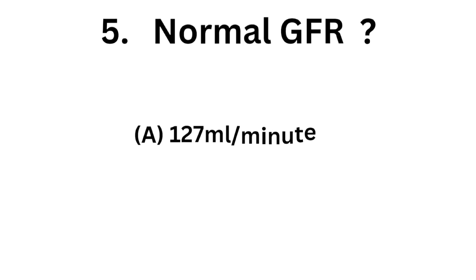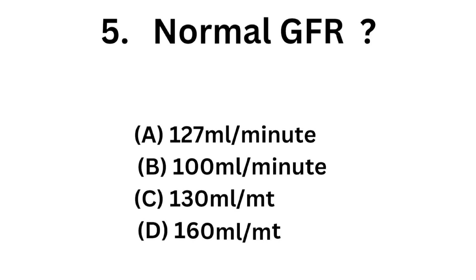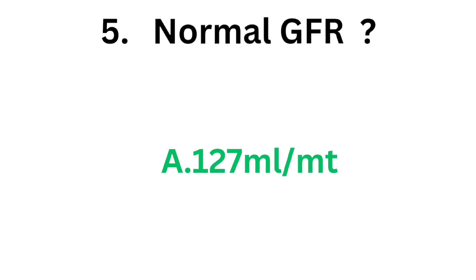Question number five: normal glomerular filtration rate — option A: 127 ml per minute, option B: 100 ml per minute, option C: 130 ml per minute, option D: 160 ml per minute. The correct answer is option A, 127 ml per minute. Normal glomerular filtration rate is 127 ml per minute.